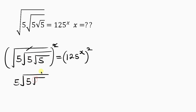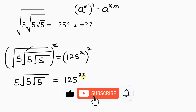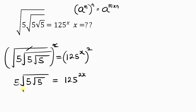So we get 5 times the square root of 5 times the square root of 5 equal to 125^(2x). This uses the index rule: when a base raised to power m is itself raised to power n, the powers multiply — so x times 2 gives 2x.